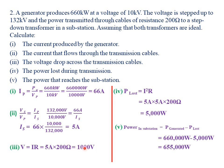For part (iv), we find the power lost during transmission. Power loss equals I squared R. The current in the transmission cables is 5 amperes, squared, multiplied by the resistance of 200 ohm: 5 times 5 times 200 gives 5,000 watt as the power lost in the transmission cables.